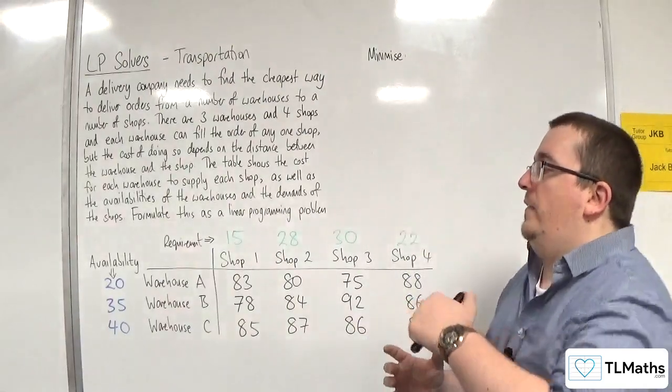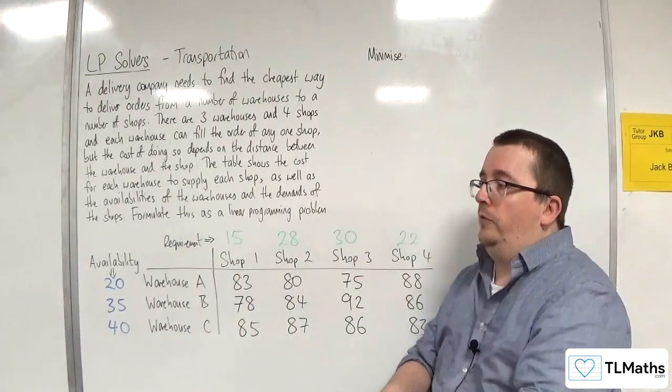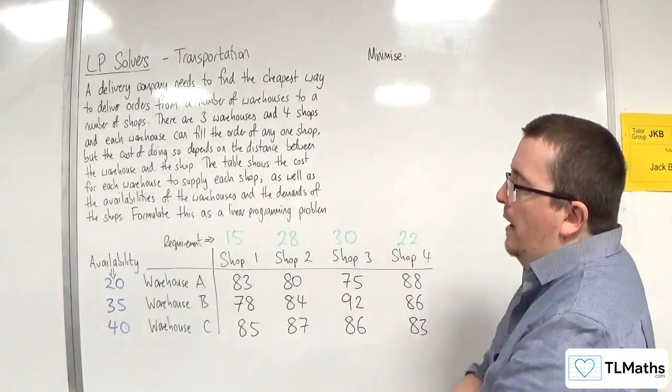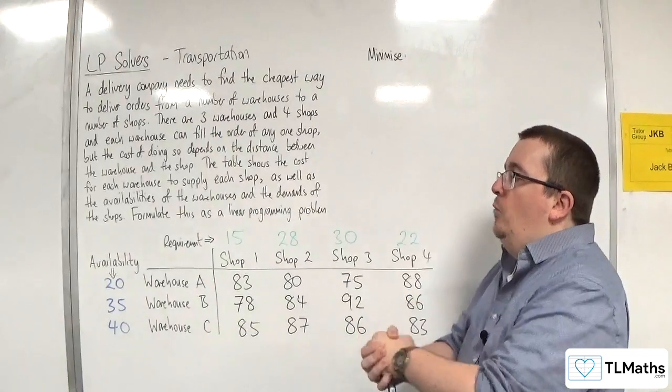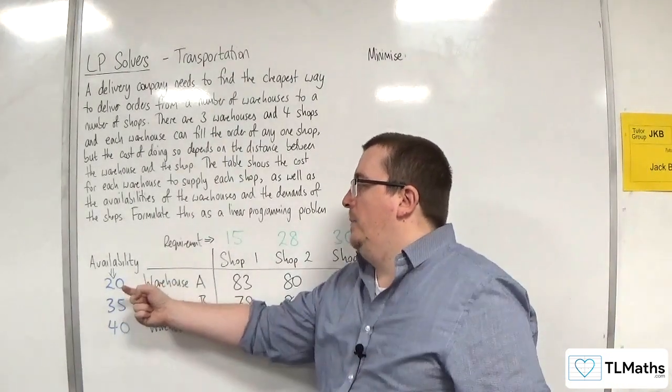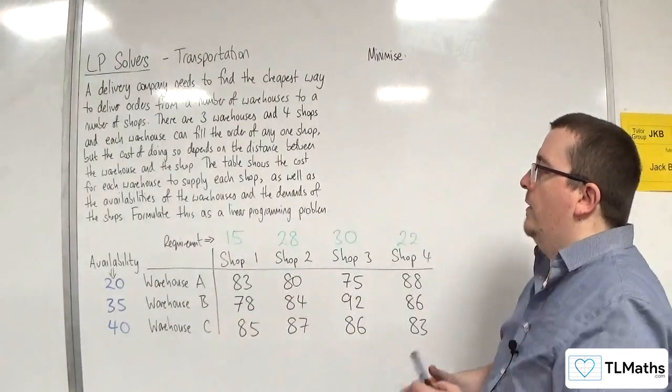So how am I going to minimize this? Well, as I said, the variables are no longer indicator variables because really they represent how much. So A1 is going to represent how much we're going to be sending from warehouse A to shop one.